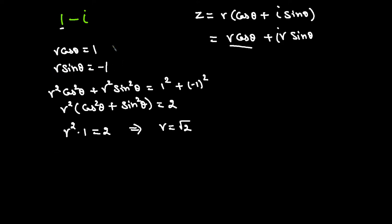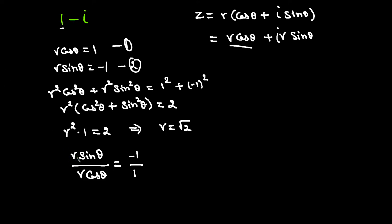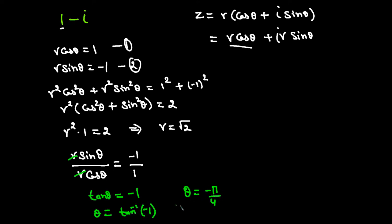To find theta, I'll divide equation 2 by equation 1: R sine theta over R cosine theta equals negative 1 over 1. The R cancels, and sine theta over cosine theta is tangent theta, so tangent theta equals negative 1. Therefore theta equals tangent inverse of negative 1, which is negative pi over 4.